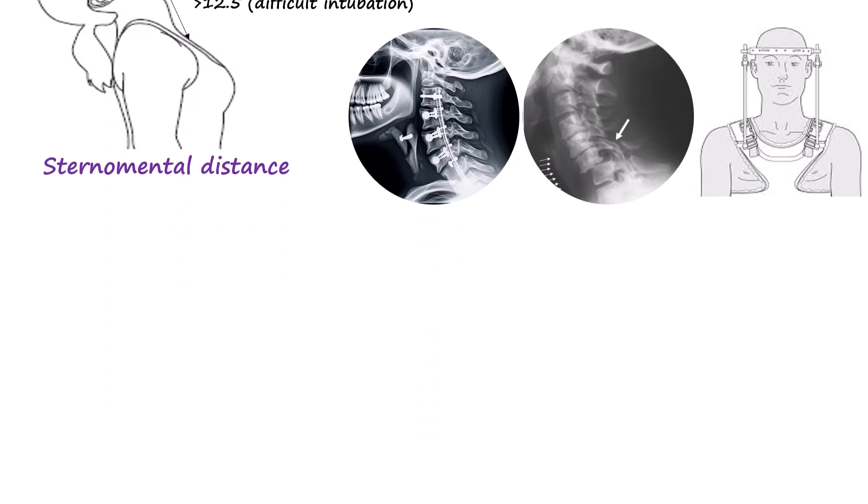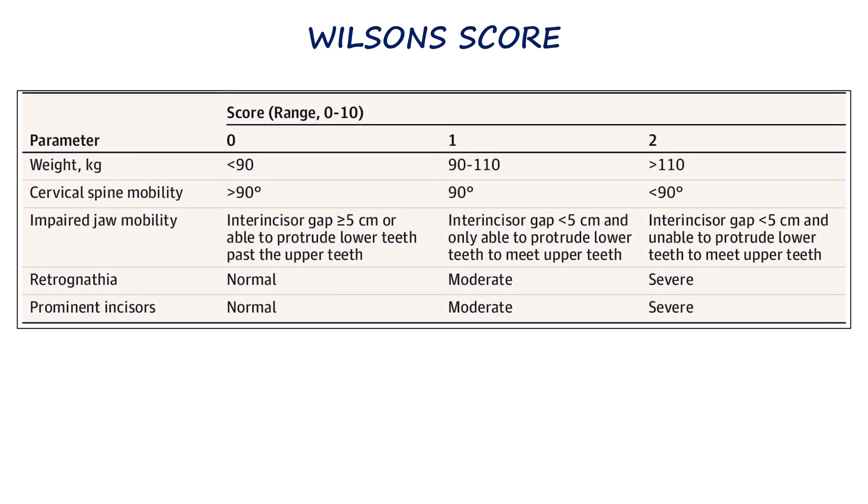We also use combined scoring systems that incorporate multiple individual parameters to predict airway difficulty. One such system is the Wilson score.